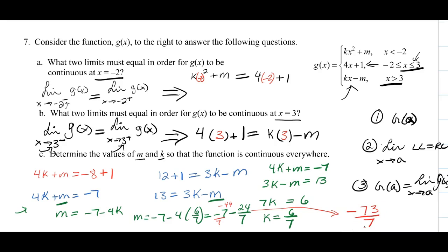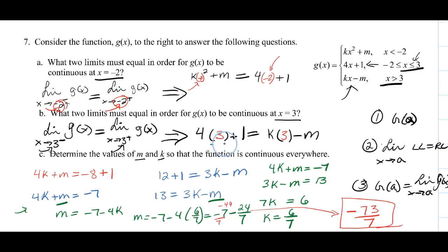The very important thing here is we identify which left limit must equal our right limit, evaluate the functions at what x is approaching, and then solve. Some students get stuck leaving x in the expression — but we evaluate x at these boundary values, negative 2 and 3, by taking the limit through direct substitution. That provides us with a system of equations to solve for m and k.